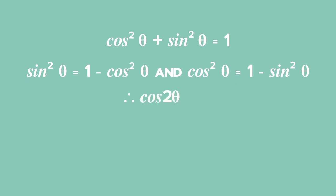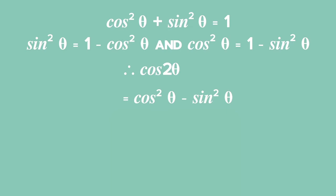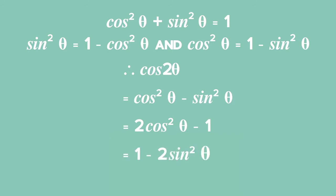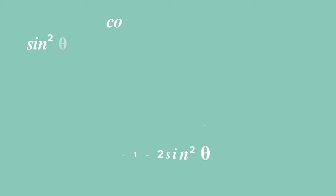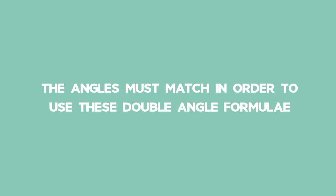It is then possible to express cos 2θ in terms of sin or cos only. Hence, cos 2θ can be written equivalently as cos² θ minus sin² θ, or 2 cos² θ minus 1, or 1 minus 2 sin² θ. It will only become clearer to you after practising many examples which form of the expression is more useful and why, based on the specifics of each individual question.